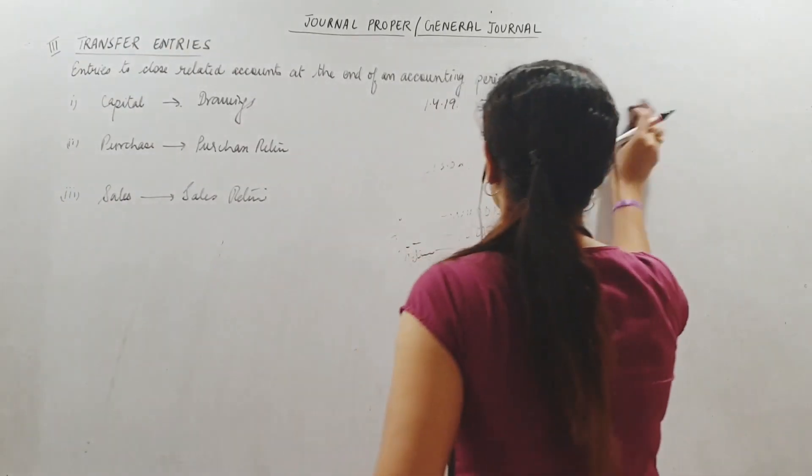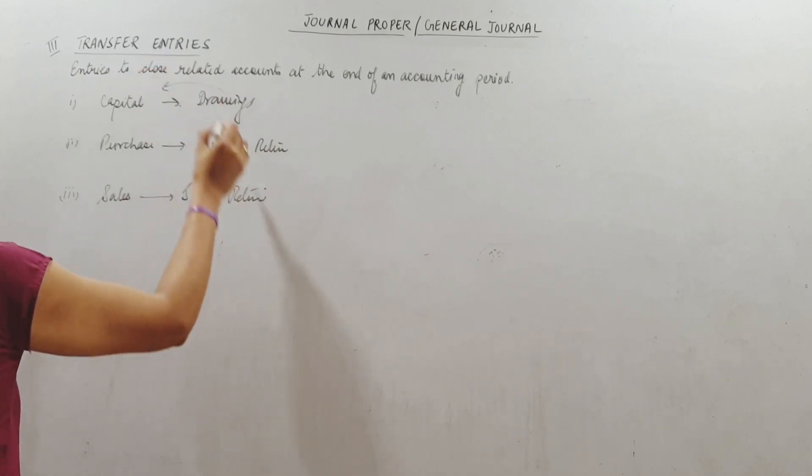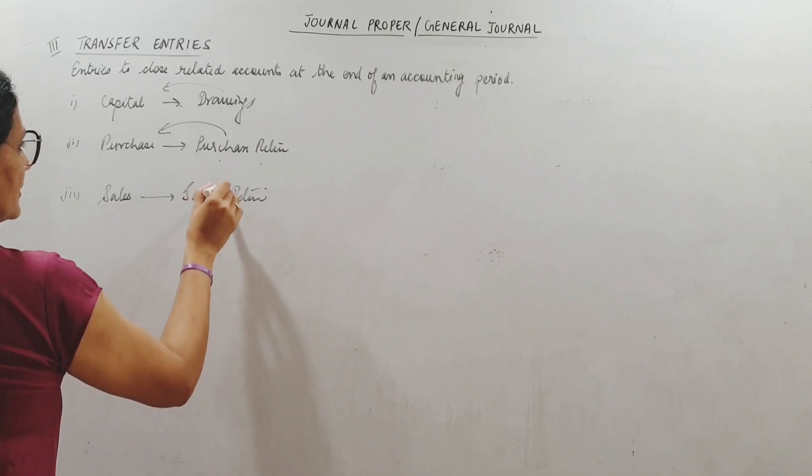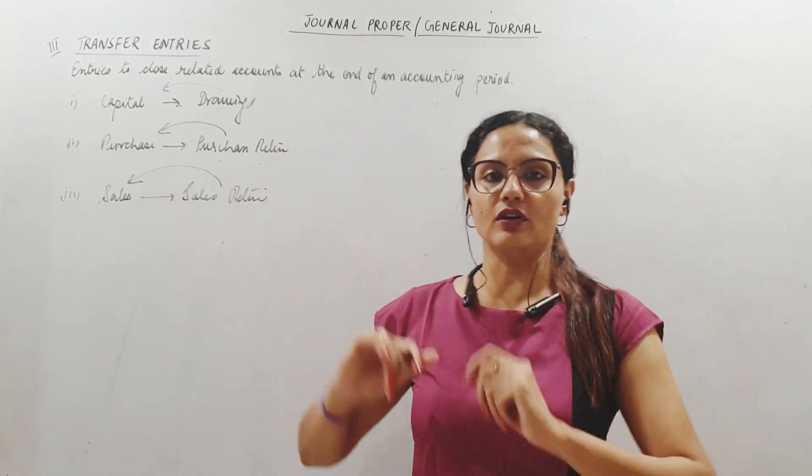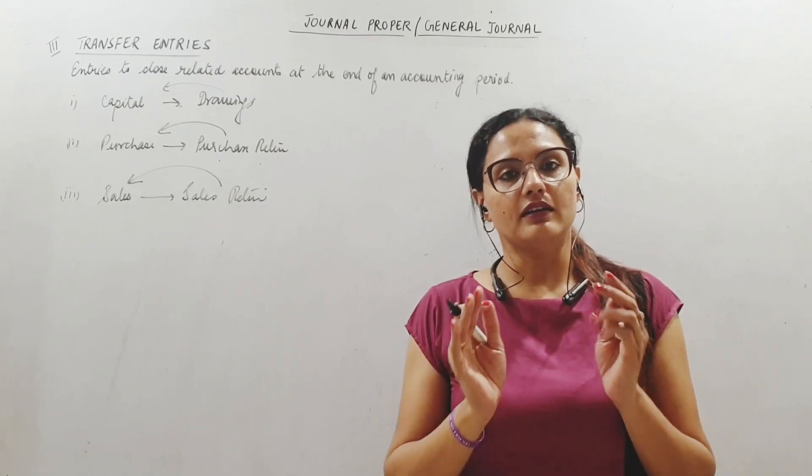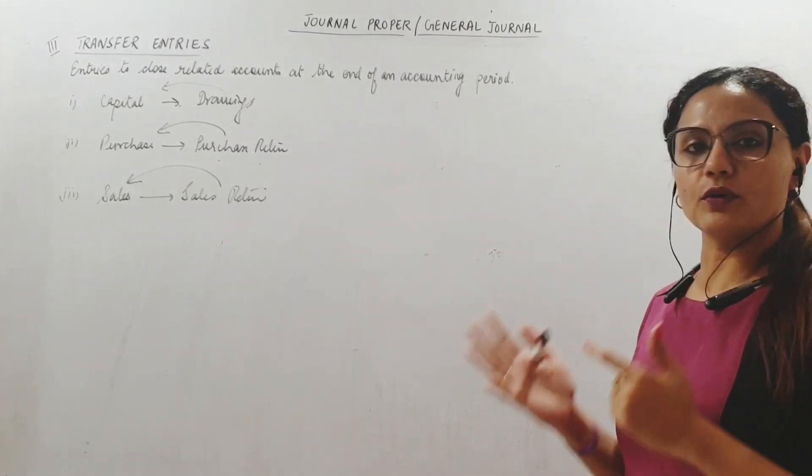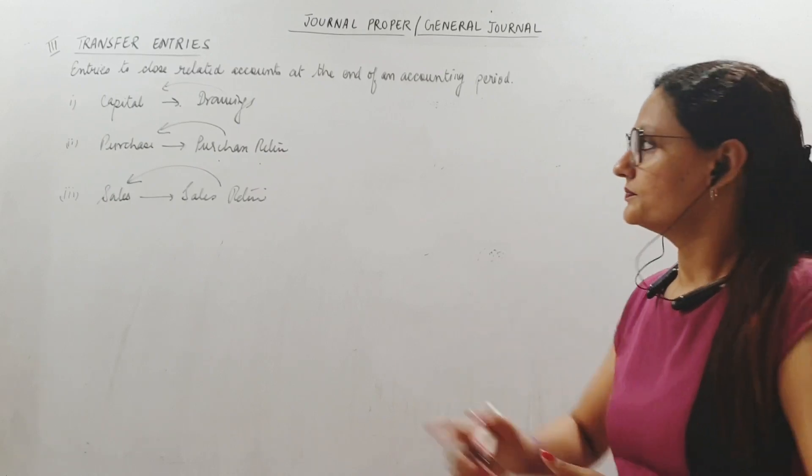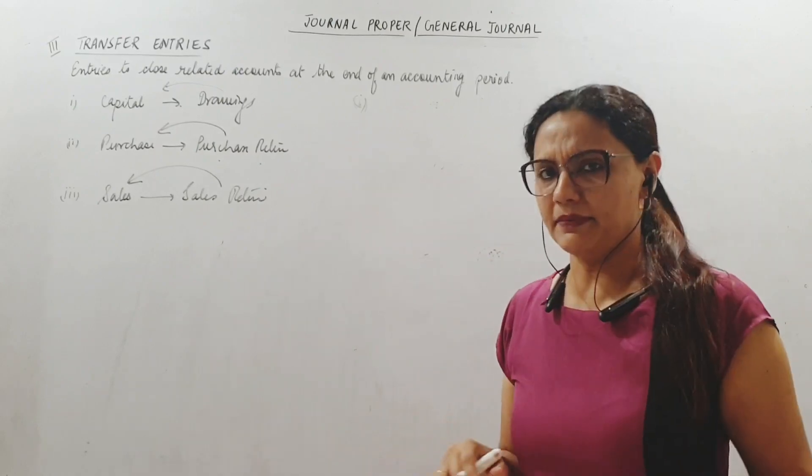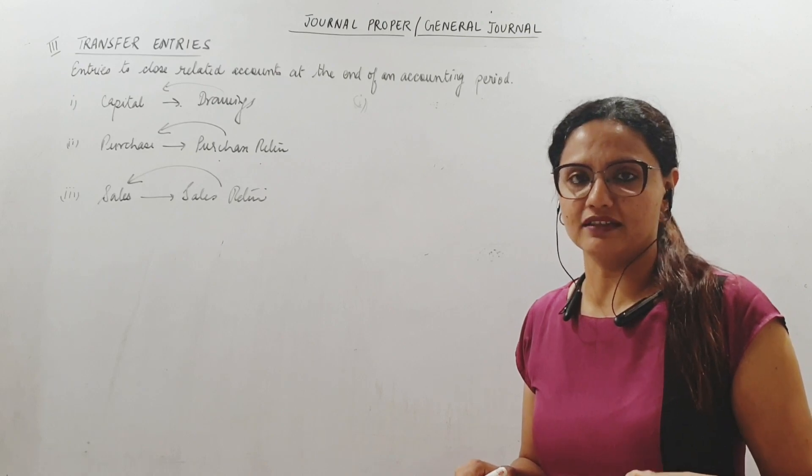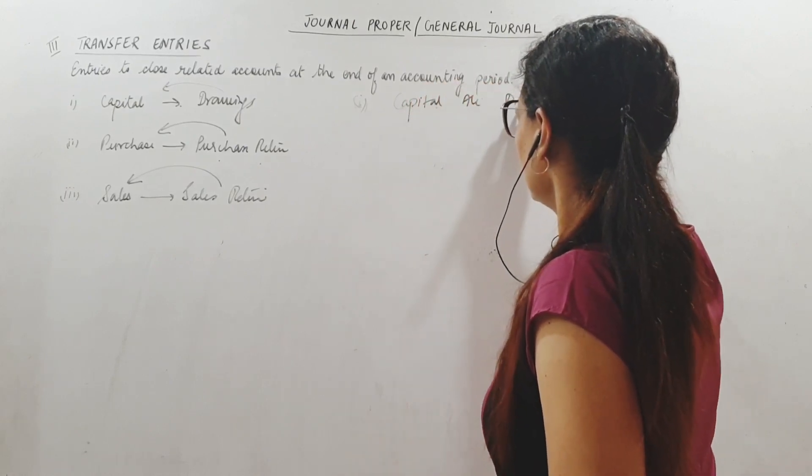Here when we have to pass journal entries meaning transfer entries to close this account by transferring to this account, close purchase return by subtracting it from purchase, sales return subtracted from sales to find my net sales. If goods worth 1 lakh sold but goods worth 5000 returned also, so net amount of sales is only 95,000. This is what transfer entries, this is what the adjustment with the transfer entry helps to do.